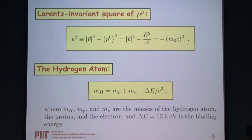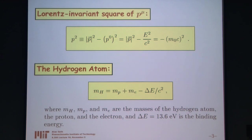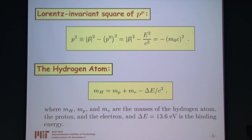Since the momentum forms a four-vector, its Lorentz invariant square should be the same in all inertial reference frames. That means momentum squared minus p₀ squared — which is momentum squared minus energy squared divided by c squared — is Lorentz invariant. To find its value, we evaluate it in the rest frame, where the momentum vanishes and the energy is just m₀c squared, giving minus m₀c squared squared. This is the easiest way to derive the energy-momentum relationship.